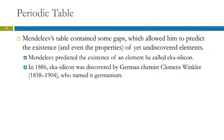The example given here is one that he called eka-silicon. Eka just means below, so it was the element below silicon. That was discovered in 1886. A German chemist discovered it, and so he named it germanium after his country.